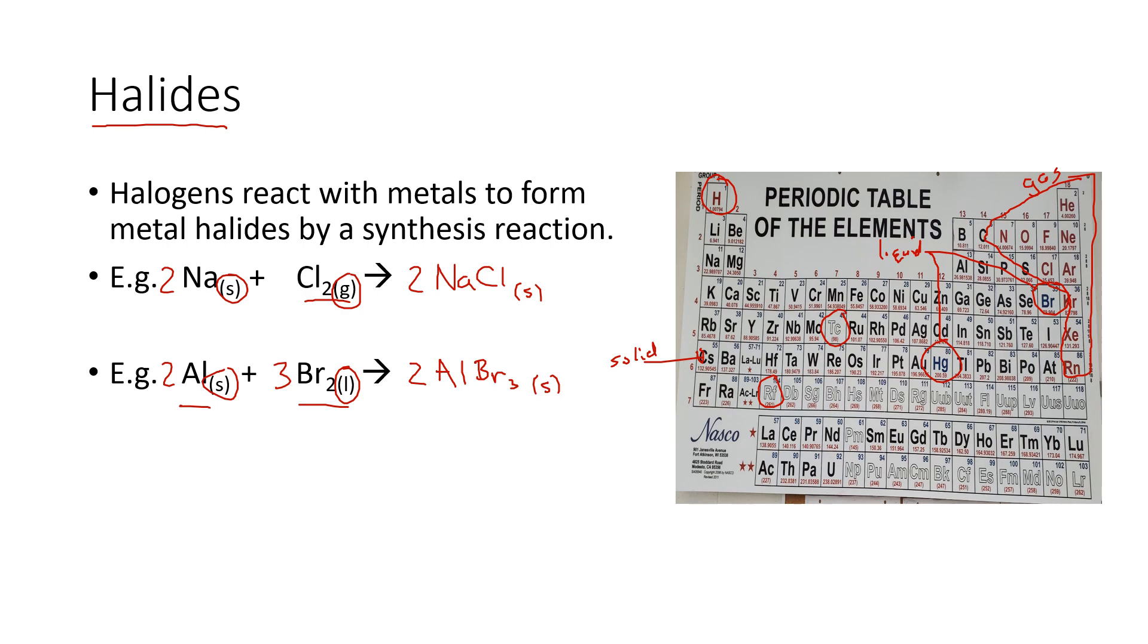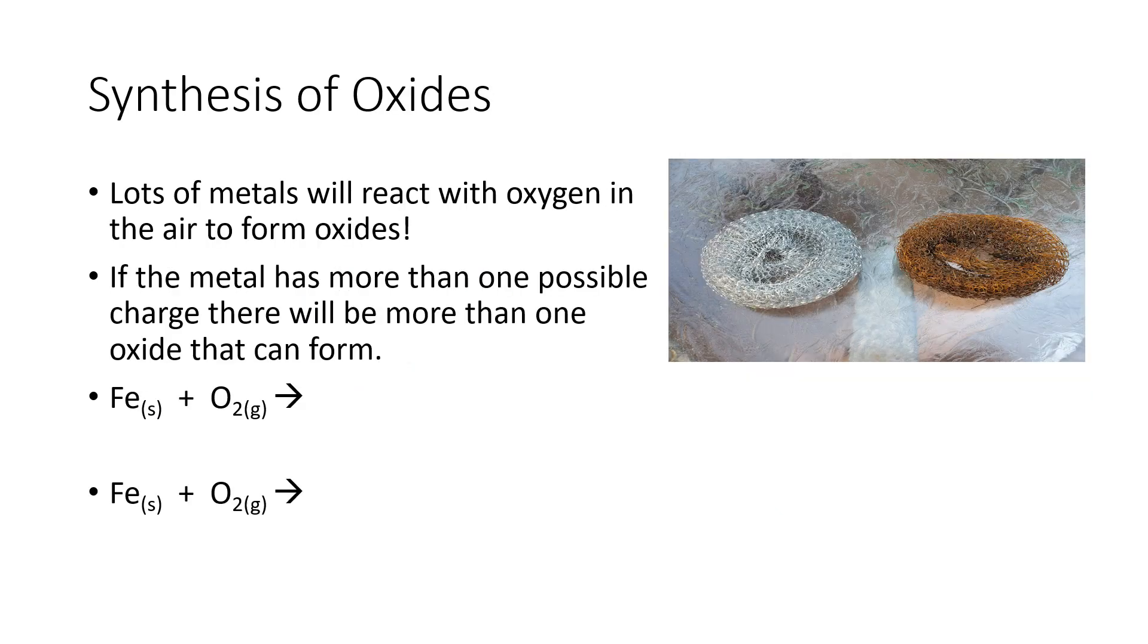Oxides is another type of compound you can make by synthesis with oxygen. You can get different oxides even with the same element because there's more than one charge for many elements. Iron has a charge of plus two or plus three. If it reacts under conditions that give it the first charge you're going to end up with this as your product.